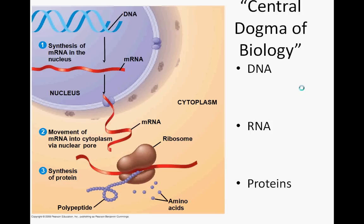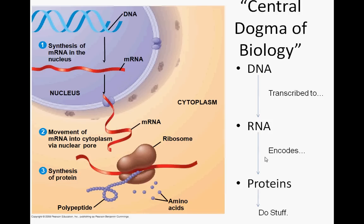The DNA that encodes the gene that makes the protein that will do that function will be transcribed into RNA. So transcription happens here, and we get an RNA molecule carrying the same information the DNA molecule has. This RNA then goes to interact with something called a ribosome, gets translated, and encodes a protein — and a protein does stuff. DNA stores the information, it's transcribed into RNA, RNA is then translated into proteins, and proteins do stuff.